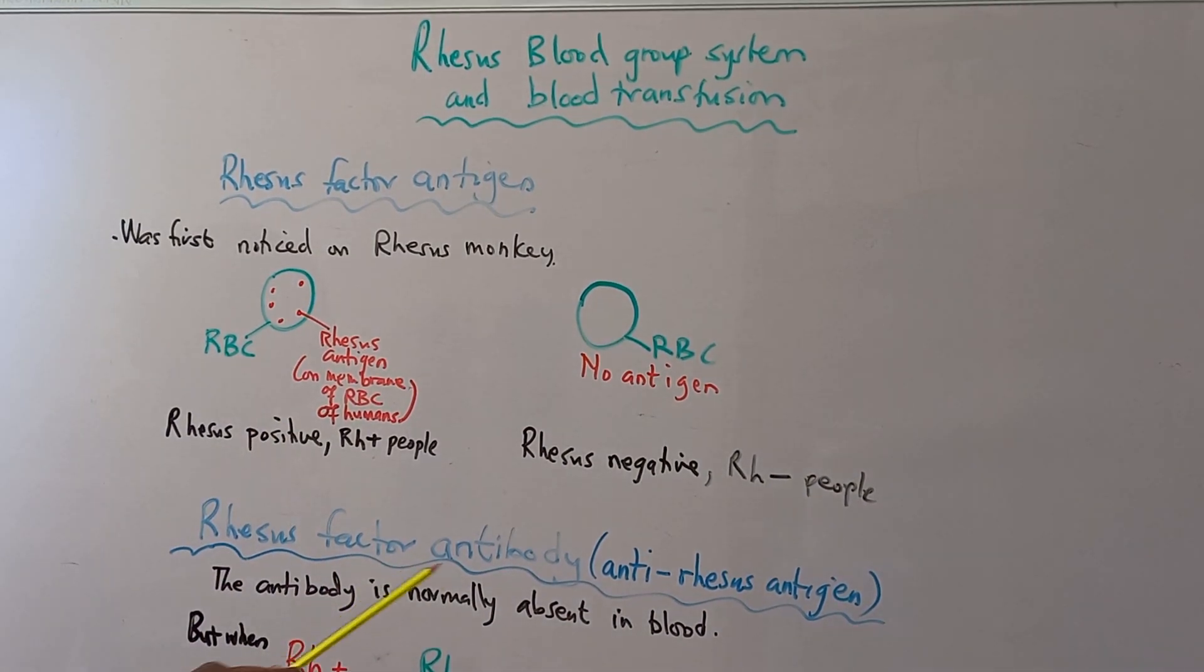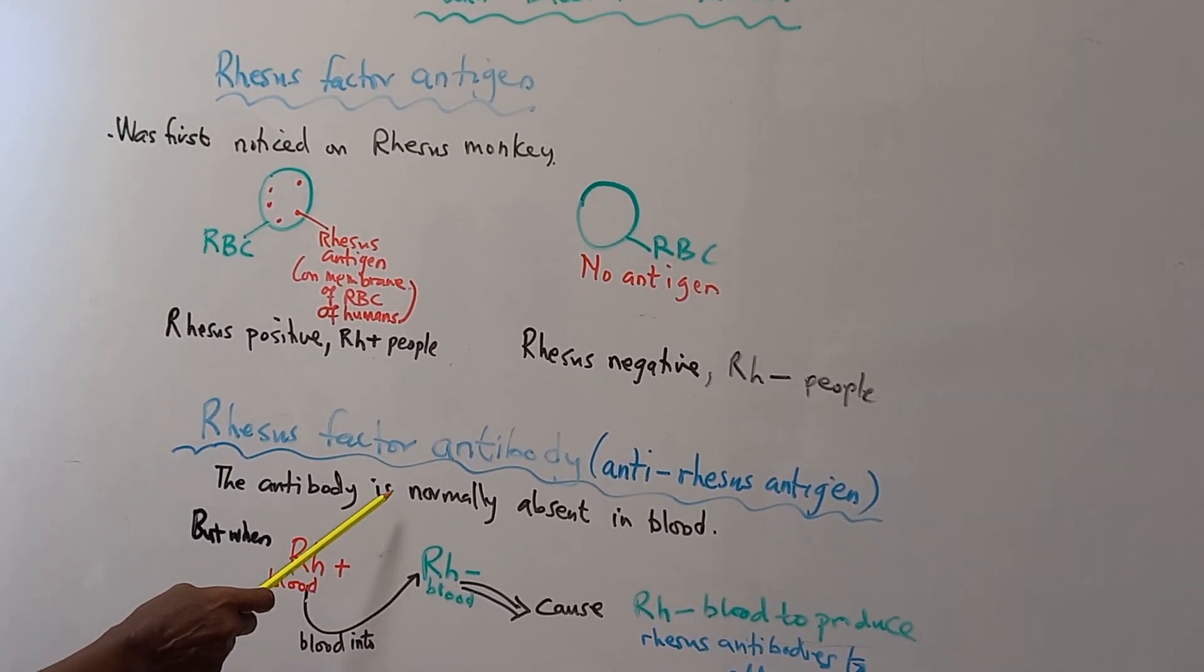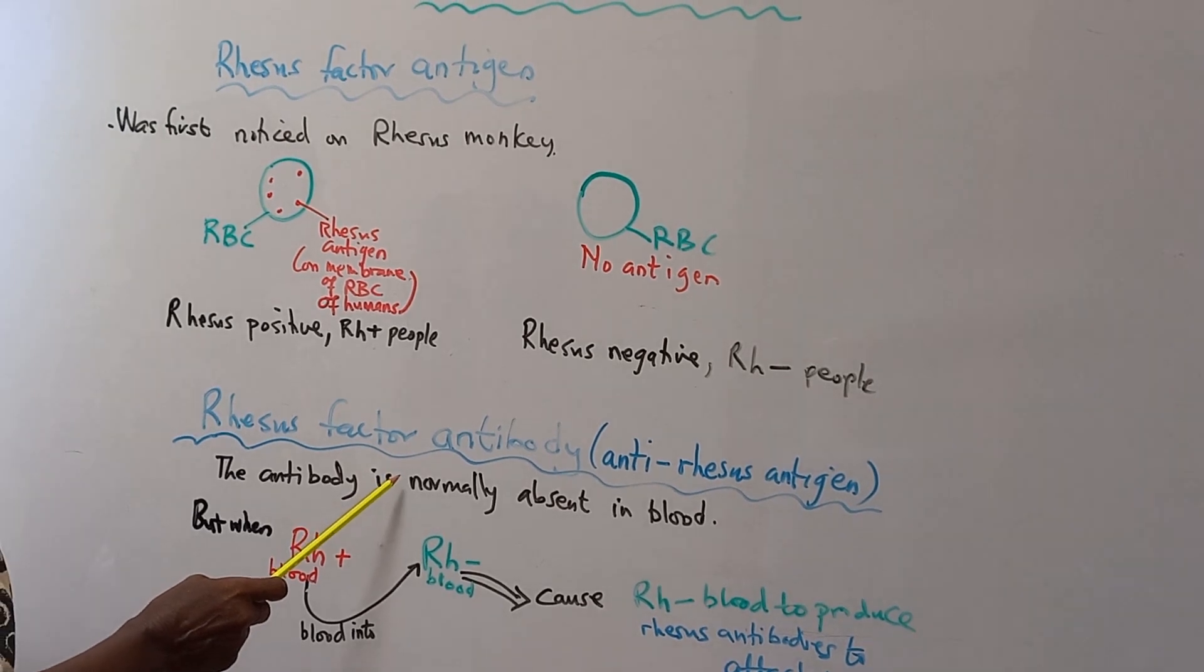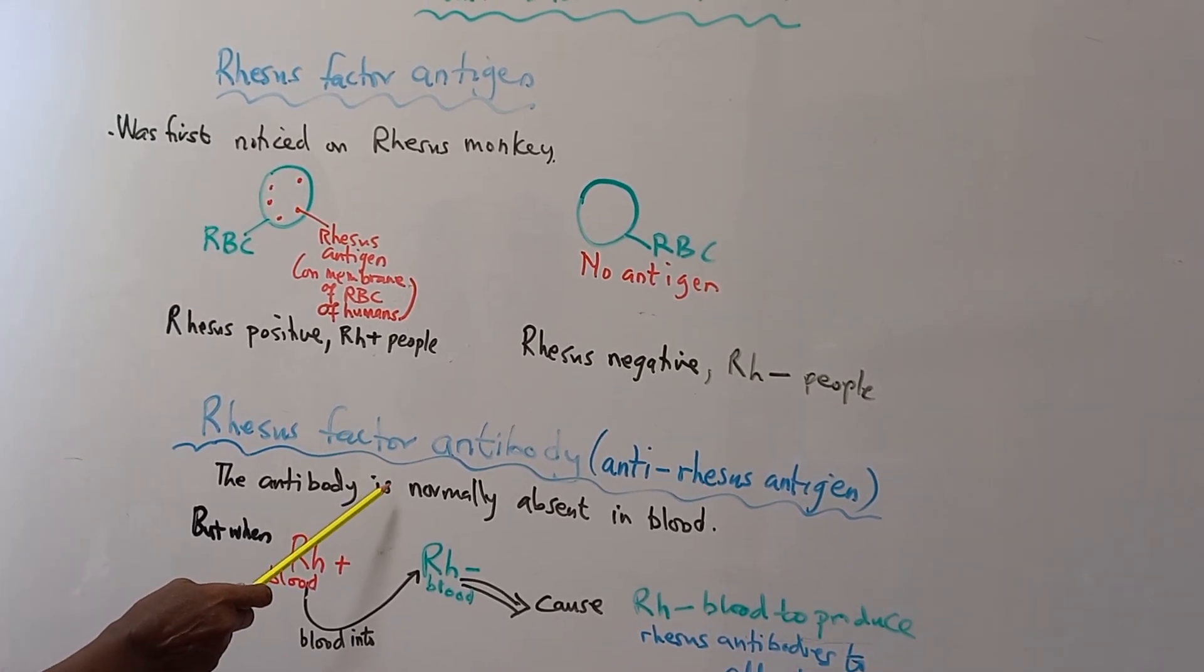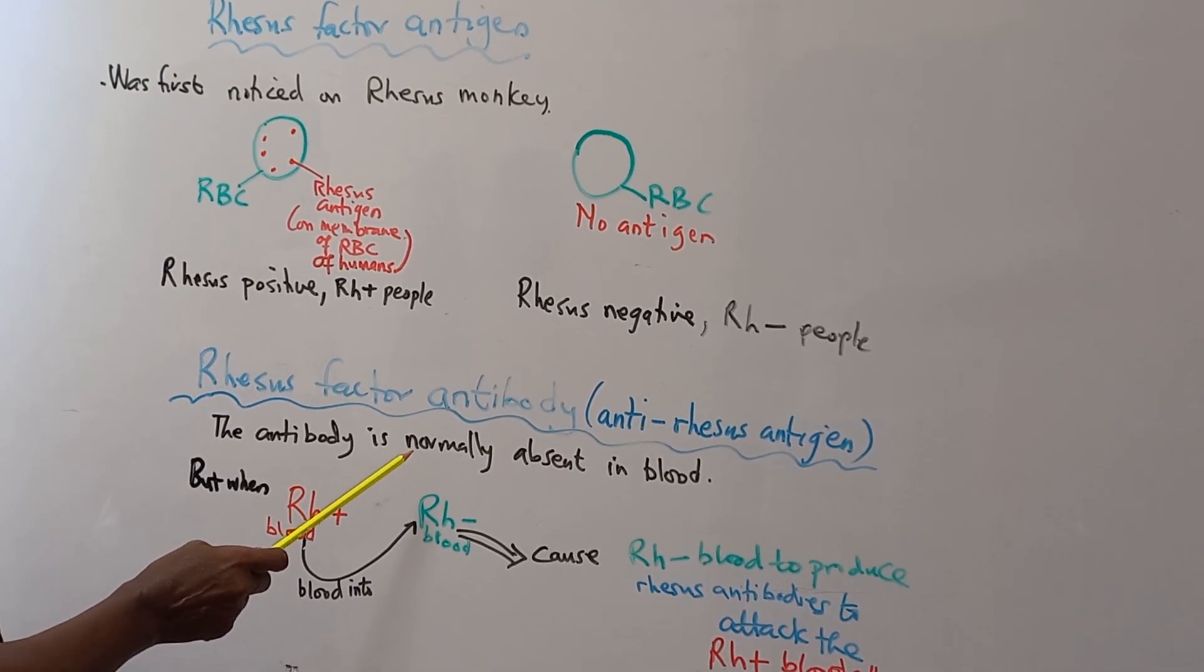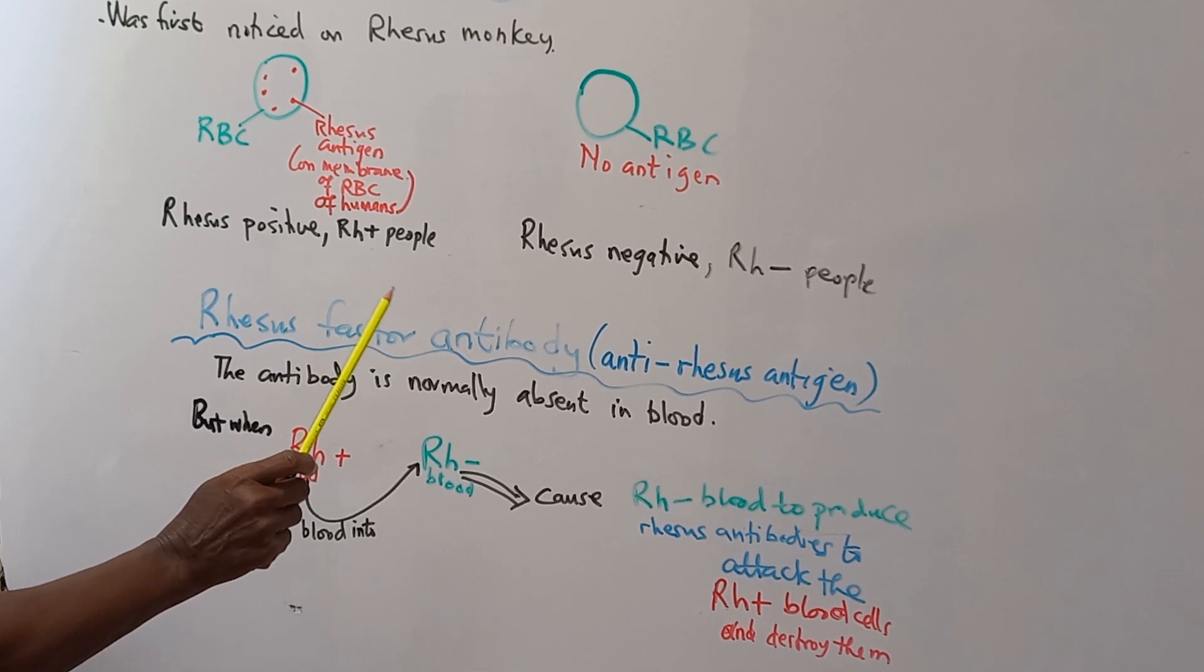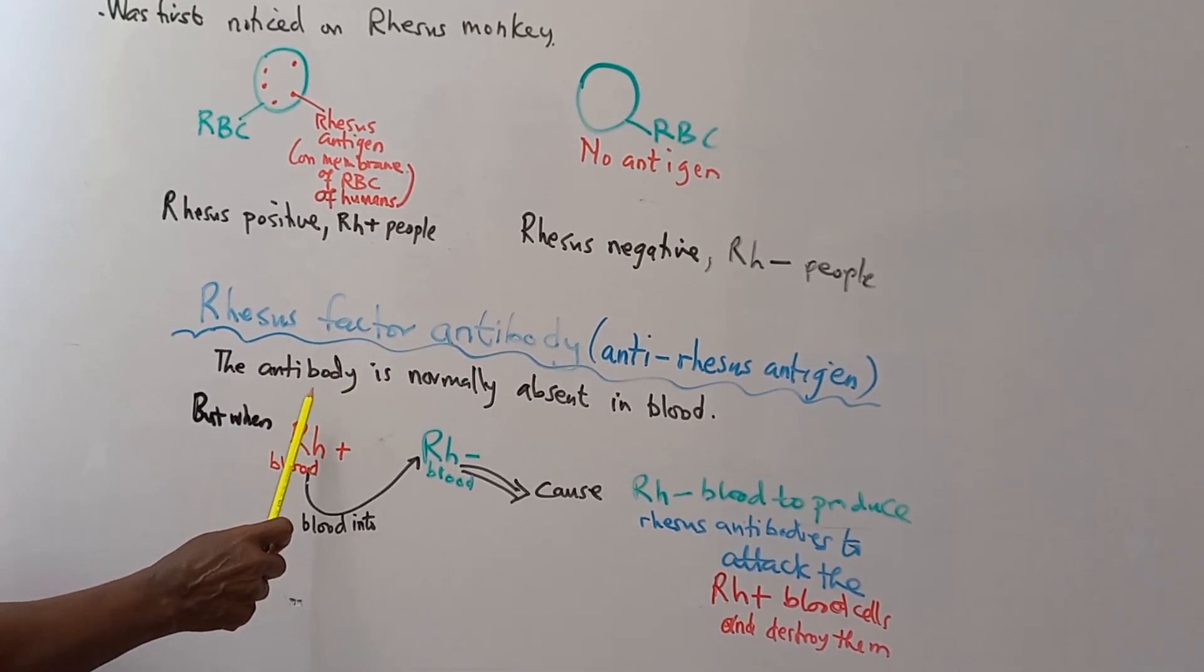The Rhesus factor antibody is normally not in blood. Like you have the agglutinogens and agglutinins in the ABO system, where you have the antibodies also in the blood plasma, the Rhesus factor antibody is not in anybody's blood plasma.